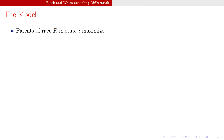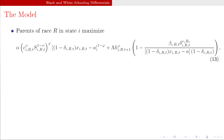Let's talk about the model. The model includes an objective function where parents of race R in state I want to maximize their utility. This is their utility function. You don't have to solve it because I don't solve it in this paper — and if I don't solve it, why would I make you solve it?